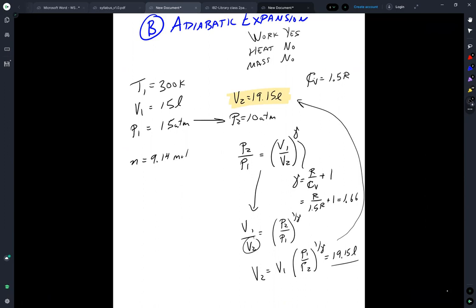Then we need the temperature. And the temperature is going to come from PV equals nRT. In state two, we've got pressure, volume, molar quantity, and R. So we get T2 is equal to P2 V2 over nR, or 255 Kelvin.